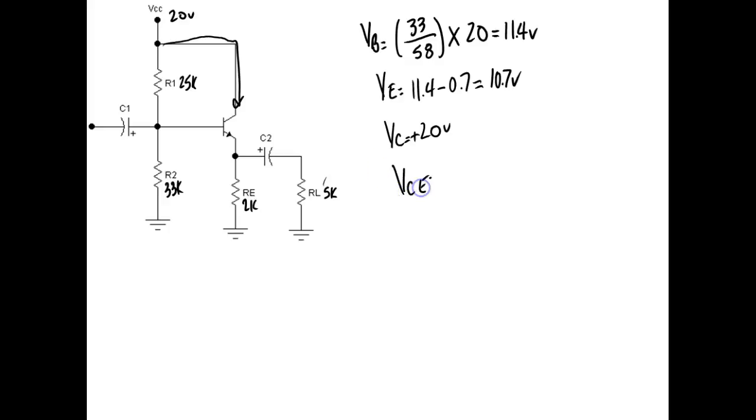Voltage collector to emitter is going to be equal to 20 volts minus 10.7 volts. What we got? 9.3. This guy's biased pretty good. We would like it to be exactly 10, but exactly 10 is hard to get using standard resistors. What else we need to calculate? I need to calculate IE. So IE would be equal to 10.7 divided by 2k, 5.7 milliamps.